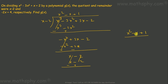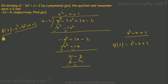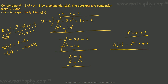So x squared minus x plus 1 is the divisor for this polynomial, so g(x) equals x squared minus x plus 1. You can verify this by dividing p(x), which is x cubed minus 3x squared plus x plus 2, by g(x), which is x squared minus x plus 1. The quotient will be x minus 2 and the remainder will be negative 2x plus 4. So the divisor is x squared minus x plus 1.